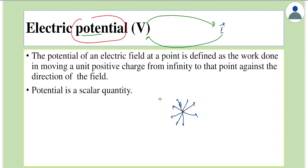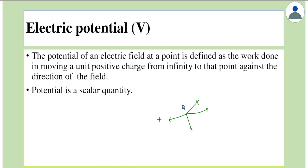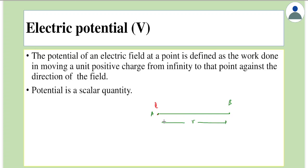So let's define electric potential. If we have a charge capital Q and we need to find the potential at a given point — say point B — where the distance from charge Q at point A to point B is some r, we know the electric field due to this charge goes out radially in that direction.